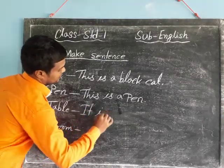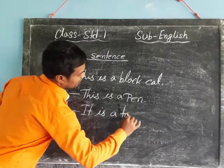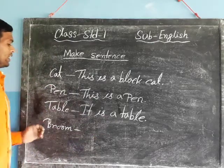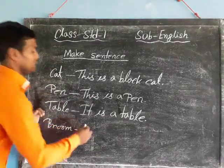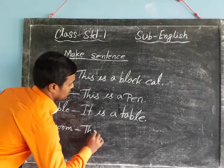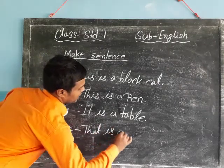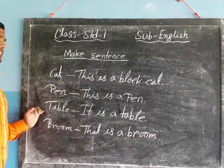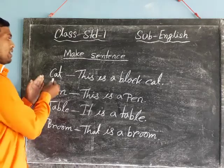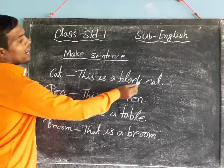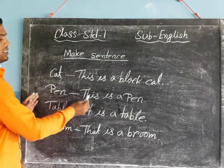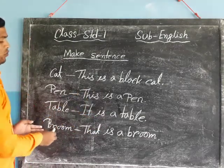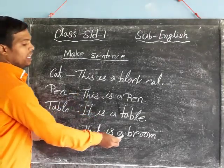It is a pen. Broom. That is a broom. A sentence is a group of words that makes a complete sense. Cat: This is a black cat. Pen: This is a pen. Table: It is a table. Broom: That is a broom.